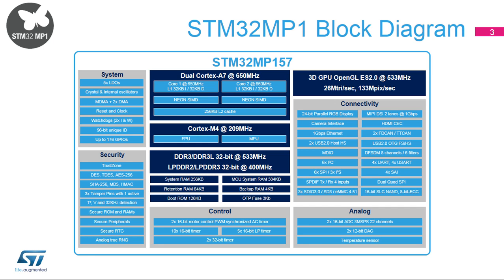The internal SRAM memory size is 708 kilobytes with a scattered architecture split into 256 kilobytes of AXI system RAM, plus 384 kilobytes of AHB-MCU subsystem RAM, plus 64 kilobytes of AHB-MCU subsystem retention RAM in backup domain, and 4 kilobytes of SRAM in the backup domain to keep data in the lowest power modes.